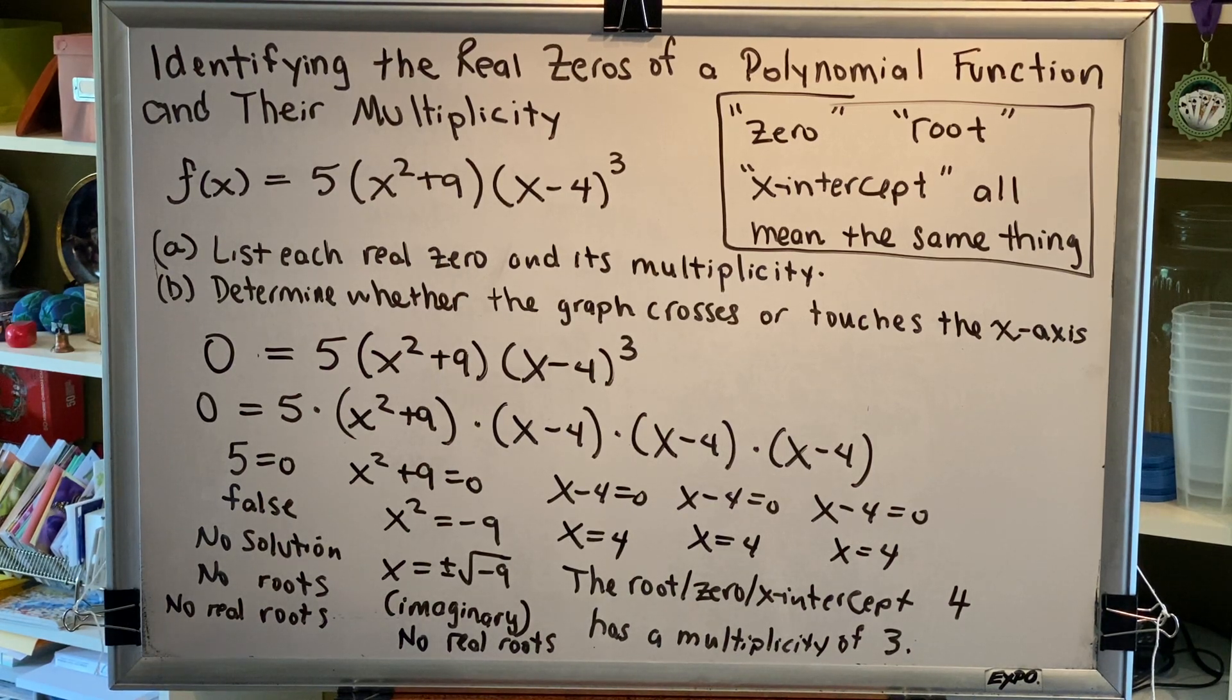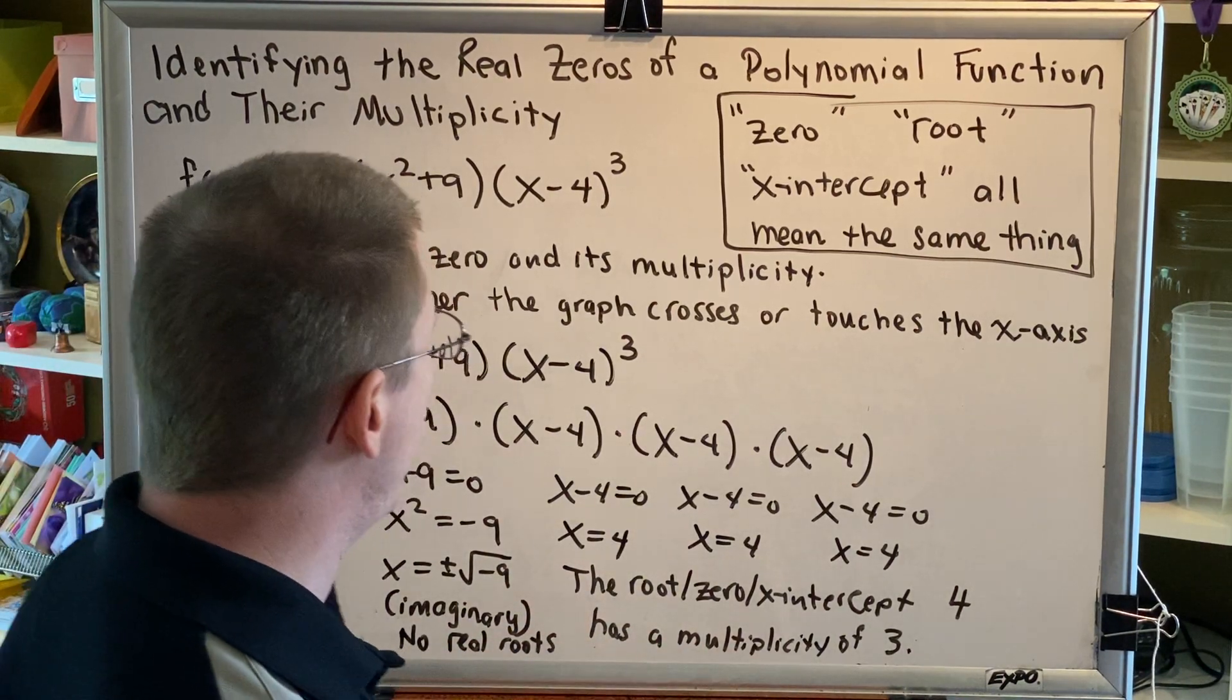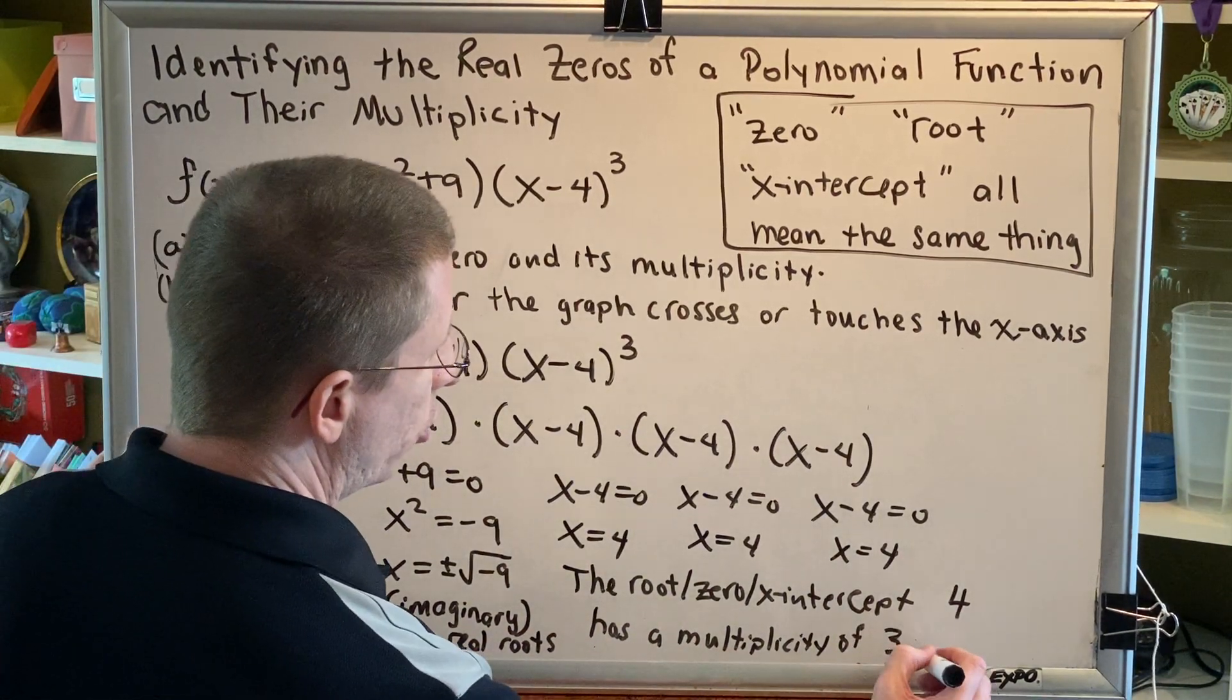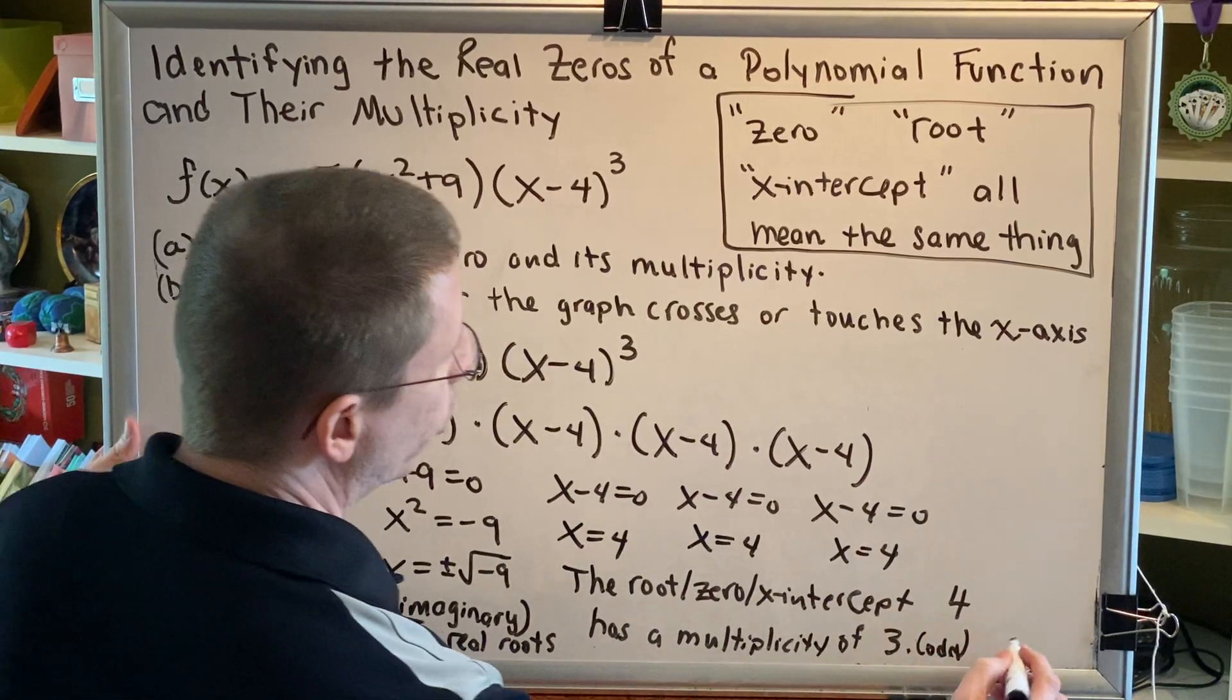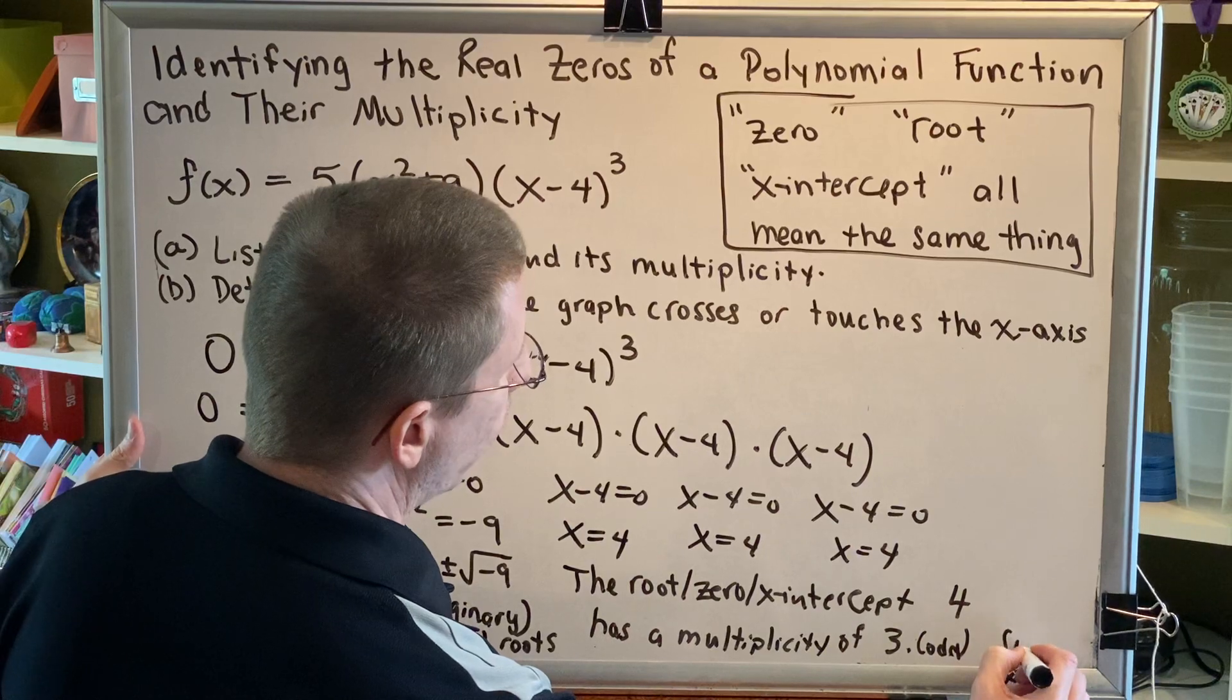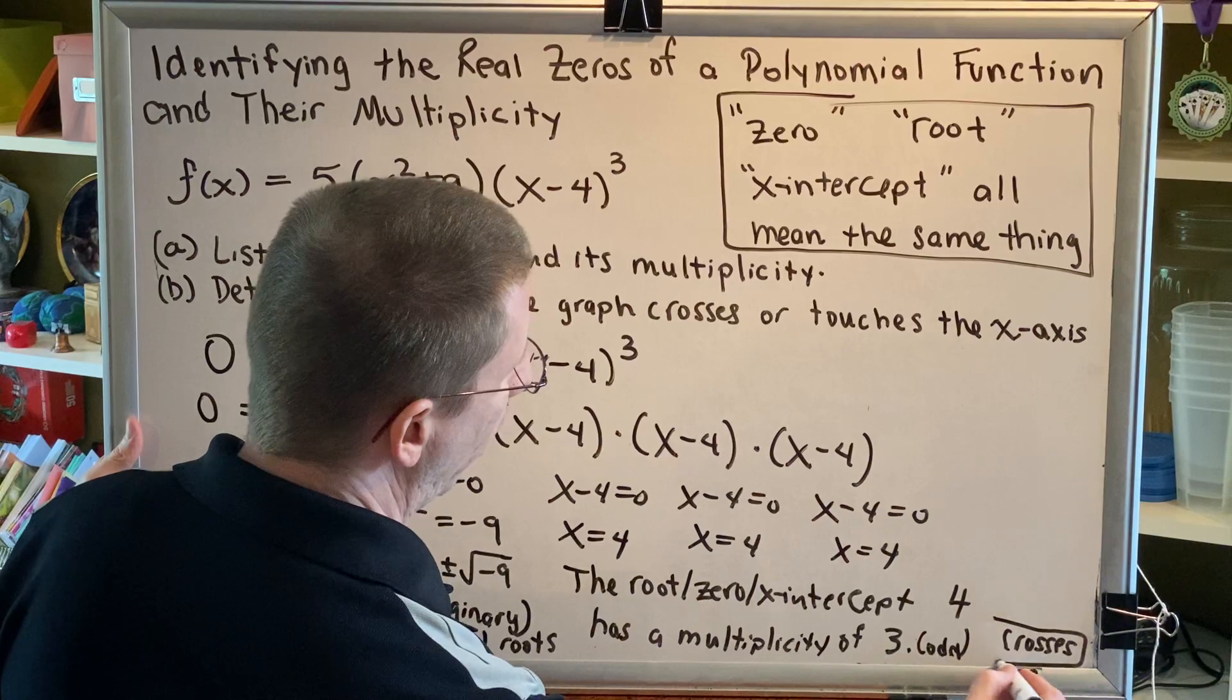Part B, determine whether the graph crosses or touches the x-axis at each root. Well, we only got one root, and it's this one right here. Because the multiplicity is 3, which is an odd number, even touches odd crosses, we say that it crosses the x-axis at that location.